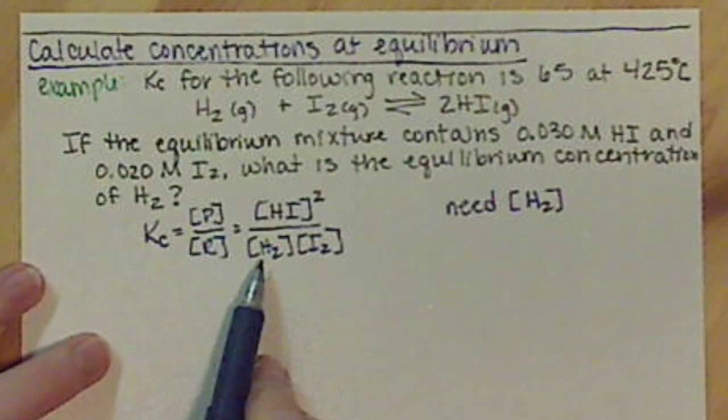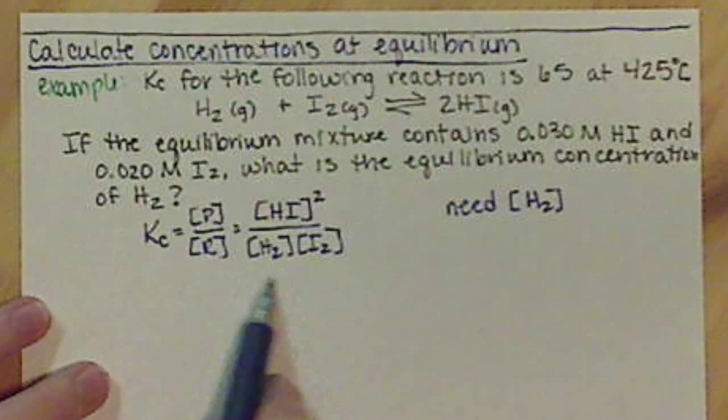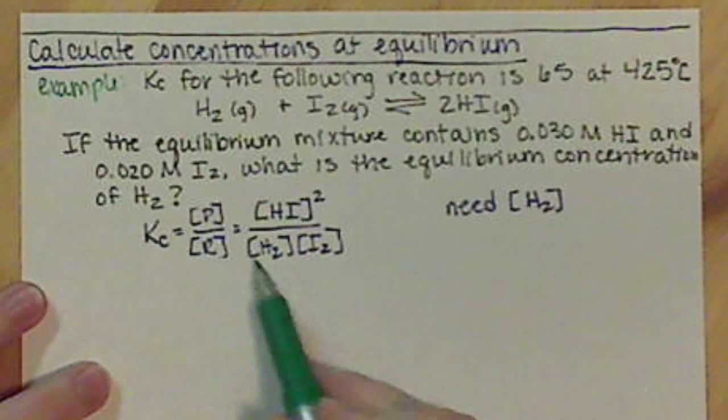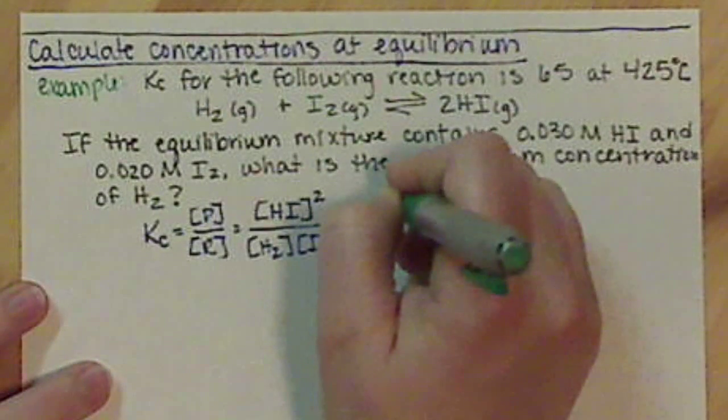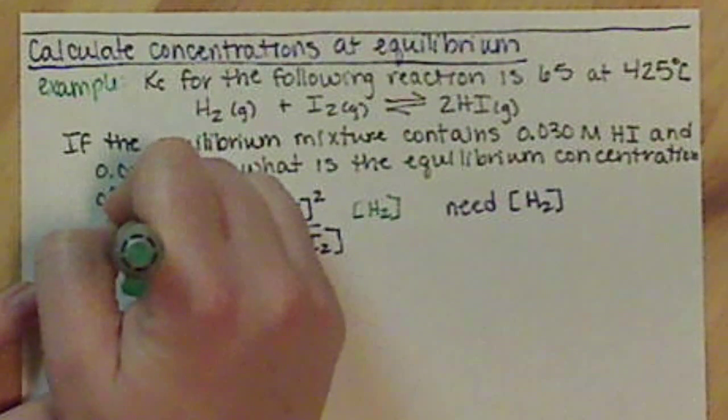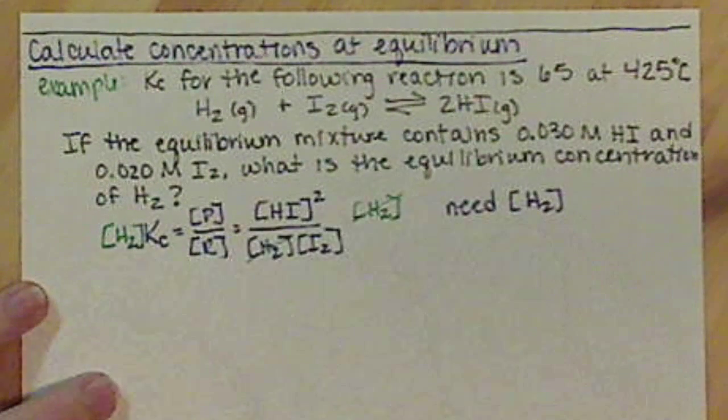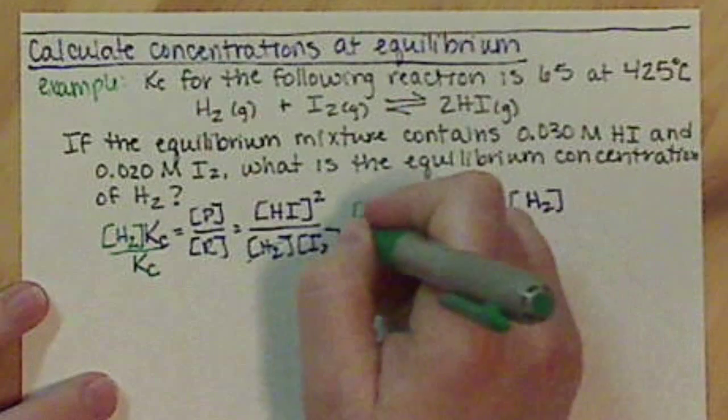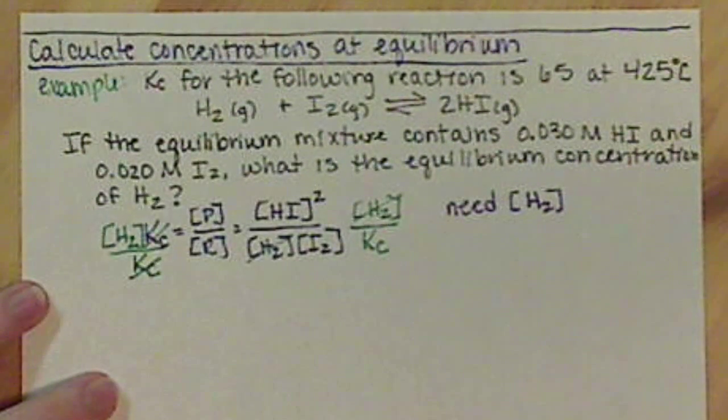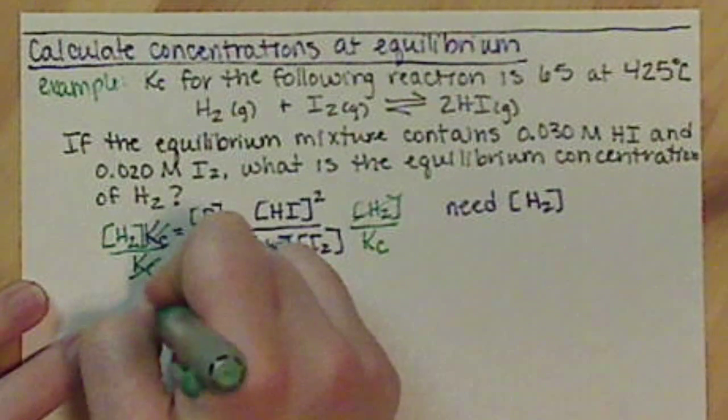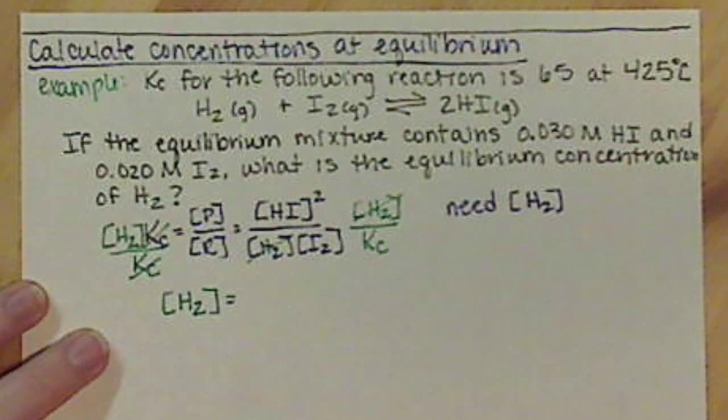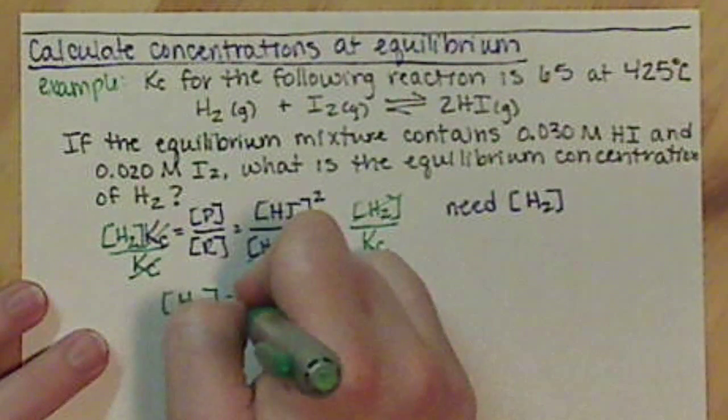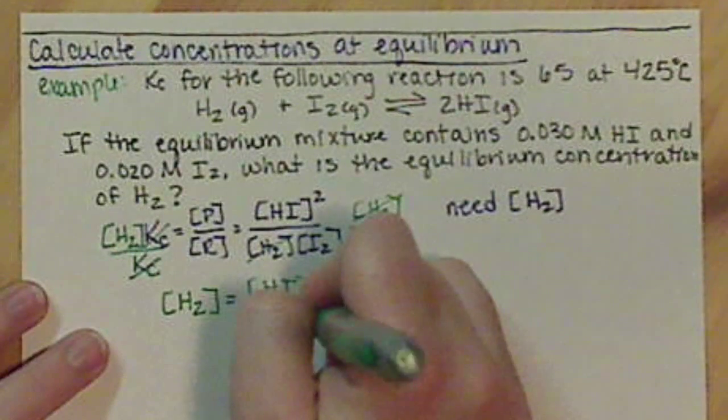Now we need our concentration of H2, and that's what we're after. So I want to solve my Kc expression for H2. So I'm going to switch pens so we can see it. We want to get H2 out of the numerator, so I'm going to multiply both sides by H2. That way these will cancel. Then I want H2 by itself over here, so I'm going to divide both sides by Kc. So those cancel. If I rewrite my expression now, I have the concentration of hydrogen is equal to the concentration of hydrogen iodide squared divided by the concentration of I2 times Kc.